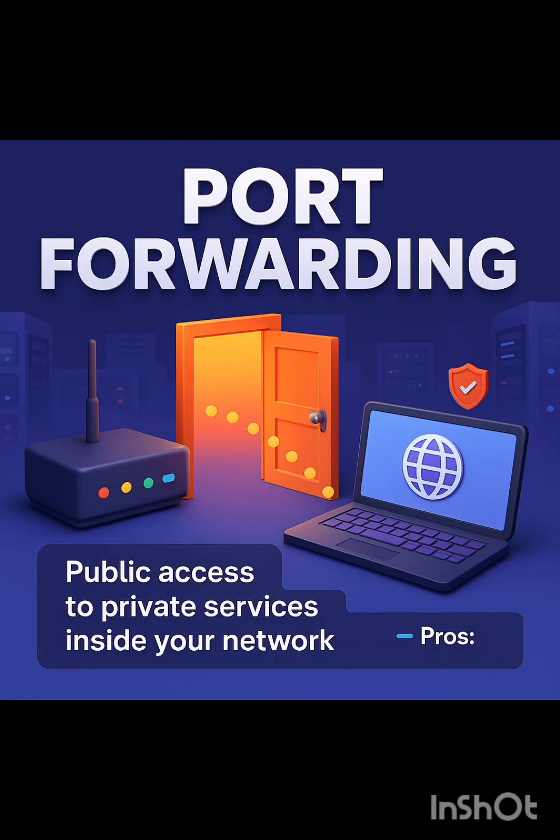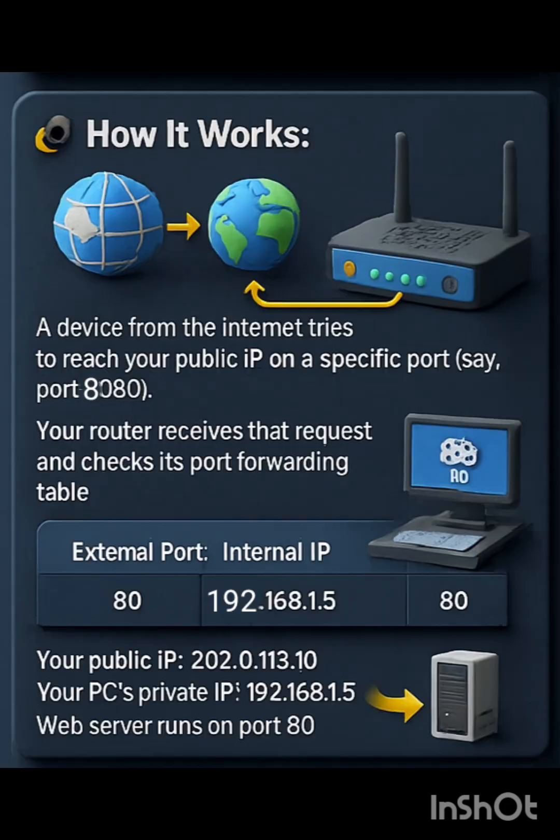How does it work? Incoming request: a device from the internet tries to reach your public IP on a specific port — let's say port number 8080.